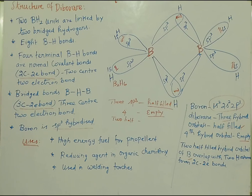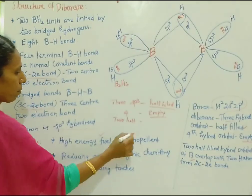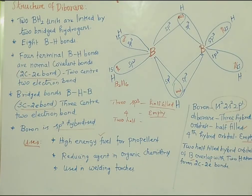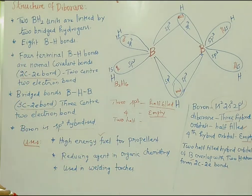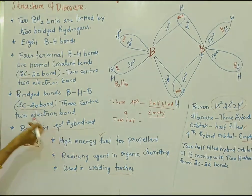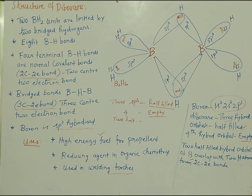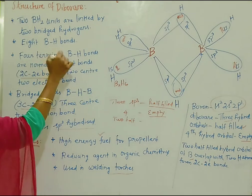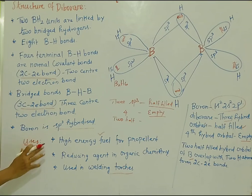Now for the uses of diborane. It is used as an energy fuel. It is used as a reducing agent in the organic industry. It is also used in welding torches. These are some of the main uses of diborane.